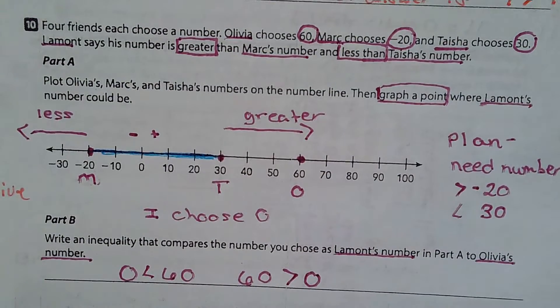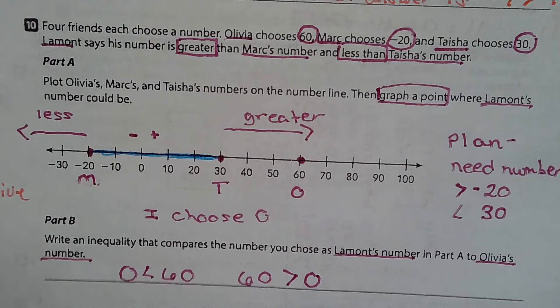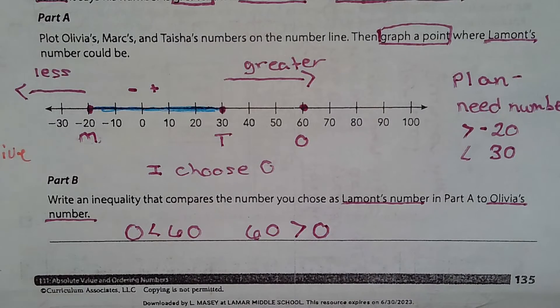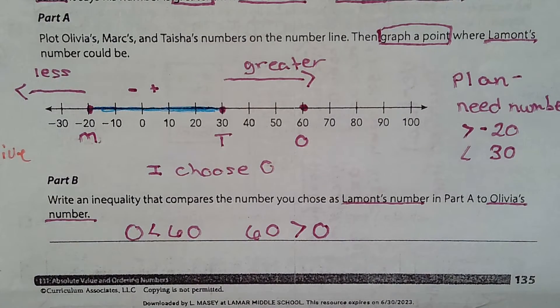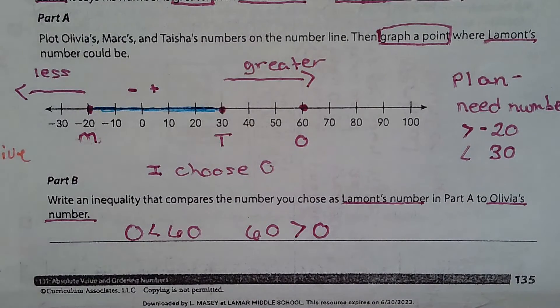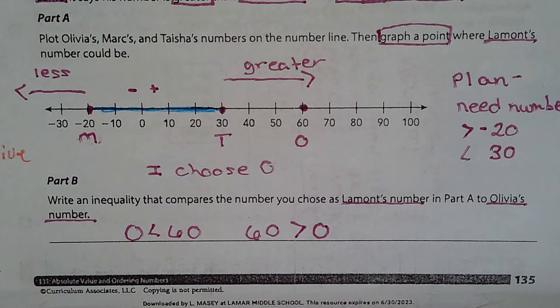Now your extra credit is to tell me the distance between Mark's score and Tasha's score. Basically, what that's saying is—well, I guess number, it's not a score, but if I was to play a game, that could be my score, right? Now I would want to know how many points do I have to make up for. So this scenario could work. Your extra credit, once again, is tell me the distance between Mark and Tasha and show your work.